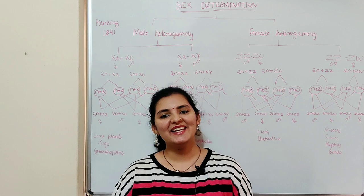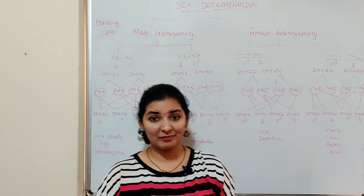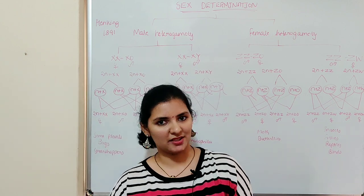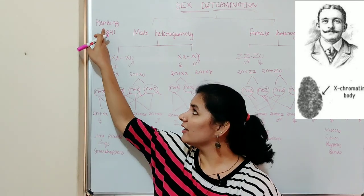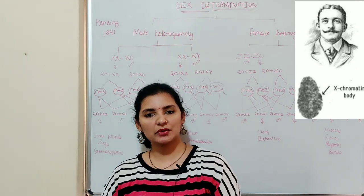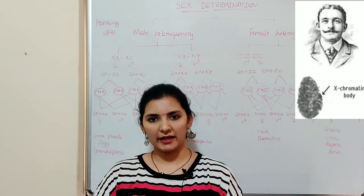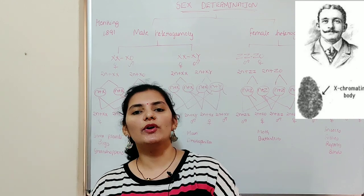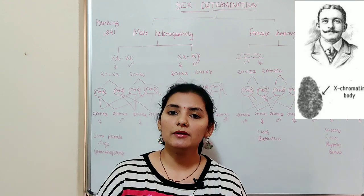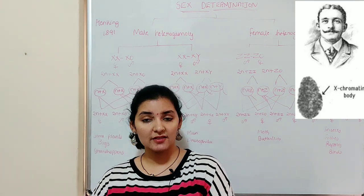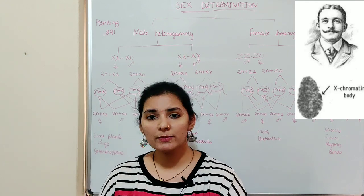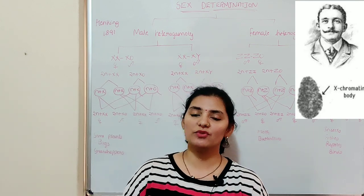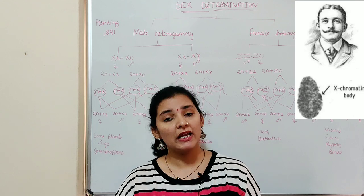Hi everyone, welcome back to my channel. In this video I'm going to talk about sex determination. Before 1891, the mechanism of sex determination was the biggest question for geneticists. It was during 1891 that Heng King for the first time noticed a deeply stained structure along with the other chromosomes under the microscope while studying the spermatogenesis of insects. He named this deeply stained body as the X body. He later observed that 50% of the sperm produced during spermatogenesis received this X body, whereas the other 50% did not.